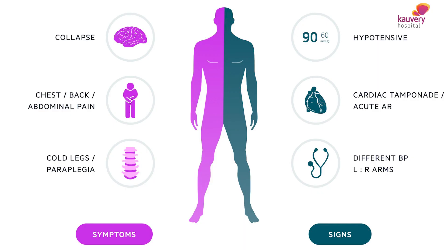Because of aortic dissection, there can be decreased blood supply to vital organs of the body. The heart does not receive its due supply of blood. The intestines, the upper limbs, the lower limbs, the brain — everything can get affected because of aortic dissection.